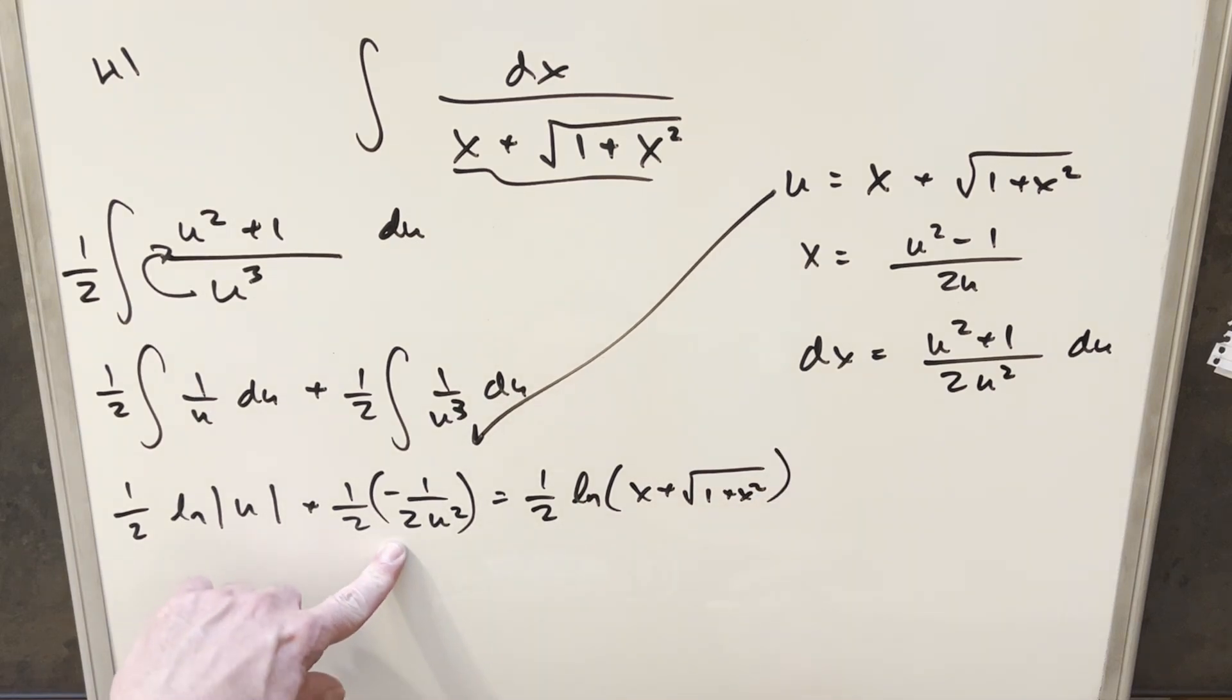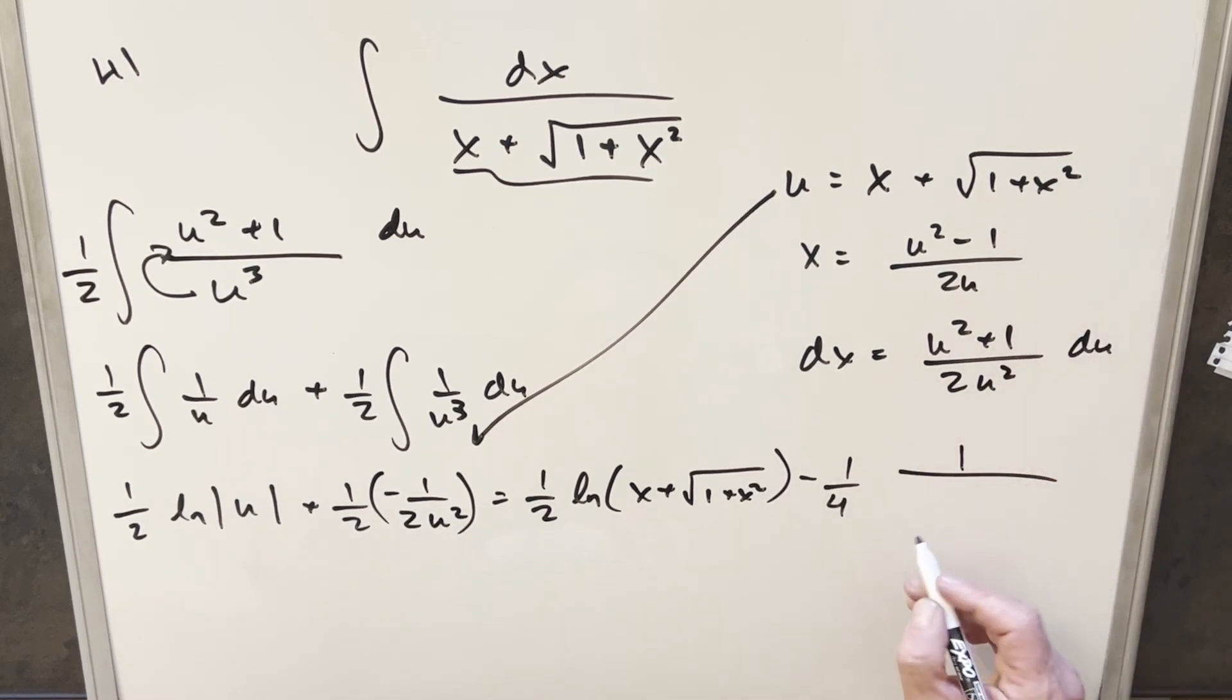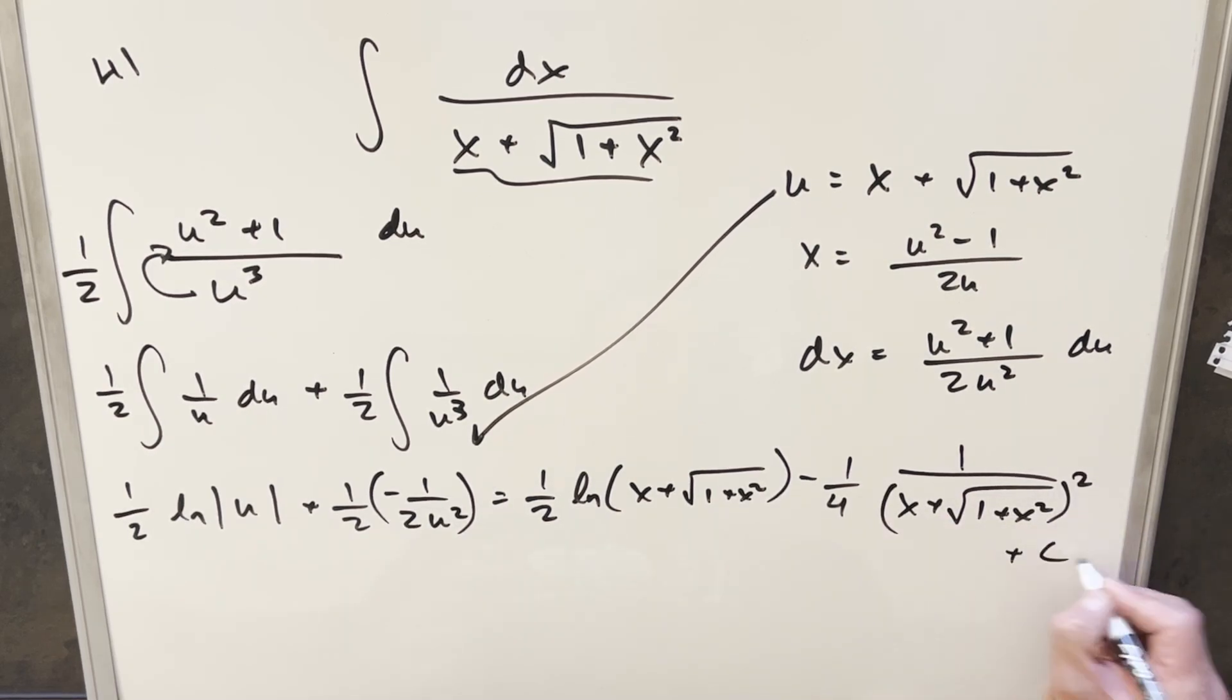Then here, multiplying half times minus half, we'll write this as minus 1 fourth. And then 1 over u squared. So this is going to become this thing just squared. So we'll have this x plus square root 1 plus x squared all squared. Add a plus c, and that's it.